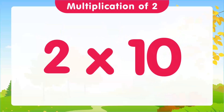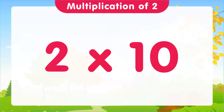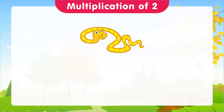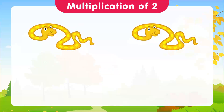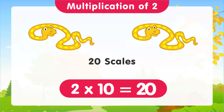And finally, 2 times 10. We're going to use snakes. Imagine we have 2 snakes. How many scales do they have between them? 20 scales. And that's our tenth multiplication: 2 times 10 is equal to 20.